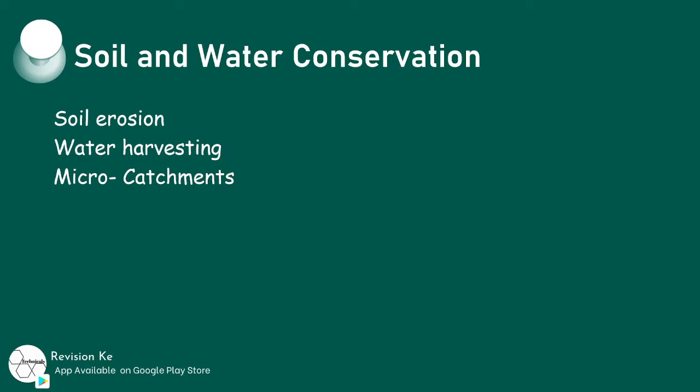We should also demonstrate a caring attitude towards soil and water, carry out soil erosion control measures, describe water harvesting and conservation techniques, describe micro catchments and their uses, and finally design and construct a micro catchment. See you in our next class.